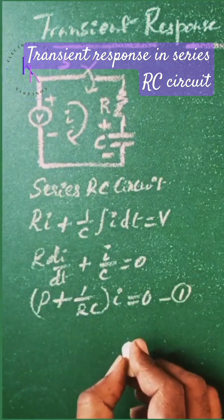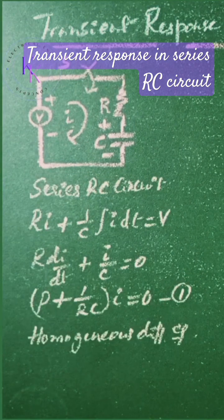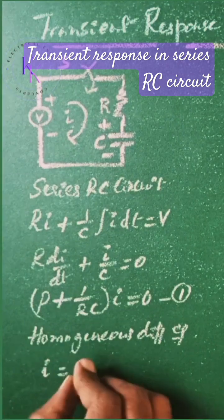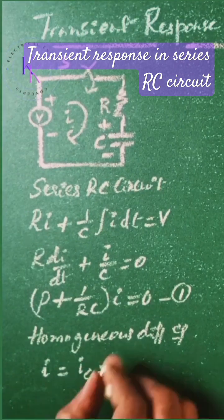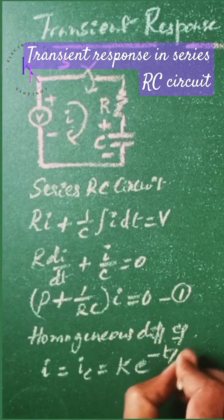This is a homogeneous differential equation whose solution contains only complementary function. Particular function being 0, I equals IC equals constant times e to the power minus t by RC.